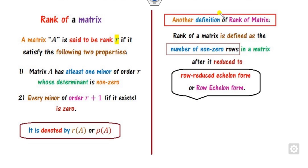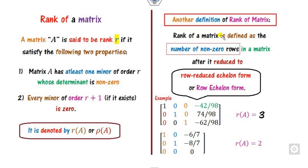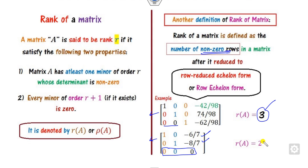Another highly recommended way is to convert the matrix into row reduced echelon form and count the number of non-zero rows. For example, looking at two matrices already in row reduced echelon form: the first has 3 non-zero rows so the rank is 3. In the second case, one row is zero, so there are 2 non-zero rows and the rank is 2.